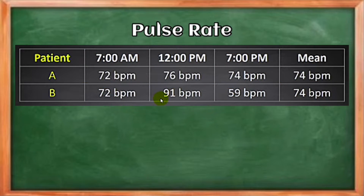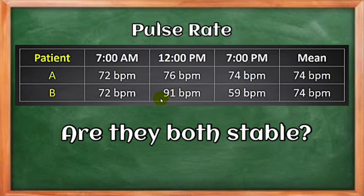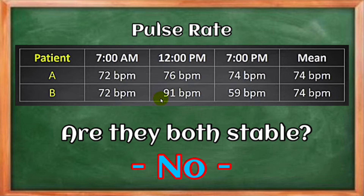Before we start with our lecture proper, let us consider the situation in a hospital where the pulse rate of each patient is taken three times a day. Patient A's readings are 72, 76, and 74 beats per minute, while Patient B's are 72, 91, and 59 beats per minute. The mean pulse rate of both patients is the same — 74 beats per minute — but that does not mean they are both stable, because we need to observe their difference in variability. Notice that the pulse rate of Patient B fluctuates widely, whereas Patient A's pulse rate is stable.